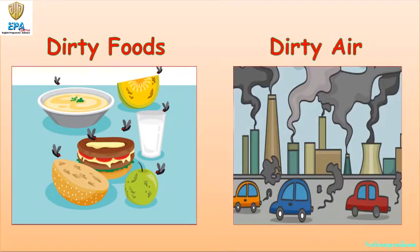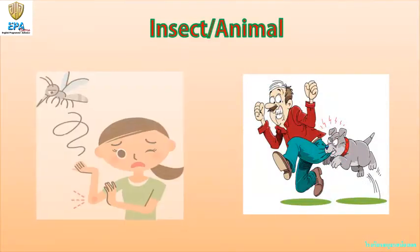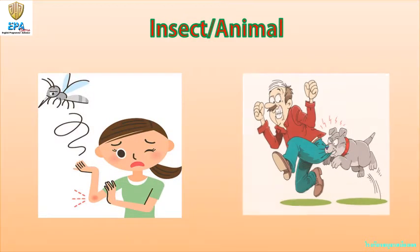Dirty air can also be a source of a disease. Smoke coming from vehicles, factories, and rotting trash carries disease-causing germs. Insects and even animals can also be carriers of a disease.